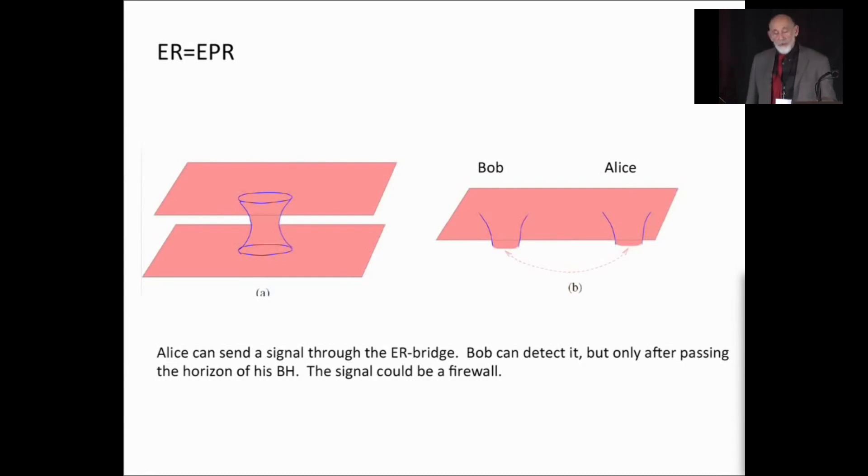They're far away from each other. The only way to go from the exterior of Bob's black hole to the exterior of Alice's black hole is to go, let's call it, around the outside, the long way, from here to Andromeda, or however far away it is. And it takes at least a million years, or whatever it is, to get to Andromeda.